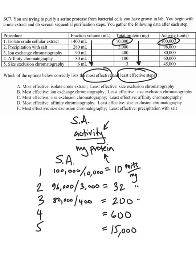So your specific activity is going up, which is what it should be, because you're constantly getting rid of proteins you don't care about, so total protein goes down. You're also losing some enzyme too — looking at the activity column, you can see it does go down, but that's because you never have 100% yield in any experimental process. You do lose enzyme at every step, but you want to minimize losses while maximizing gains.